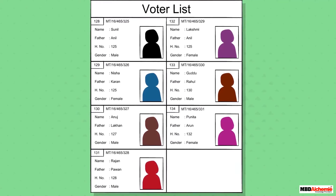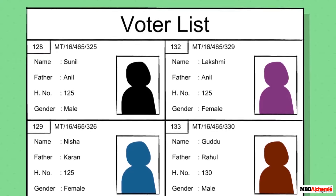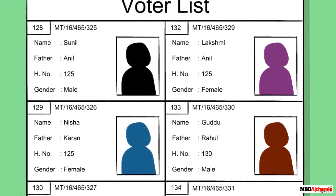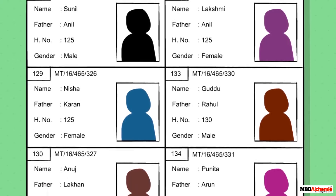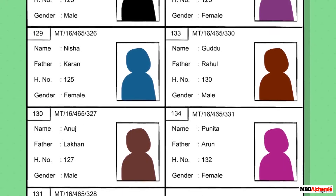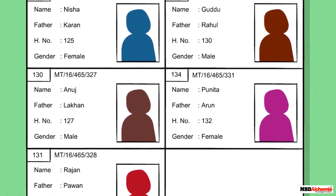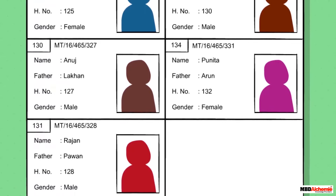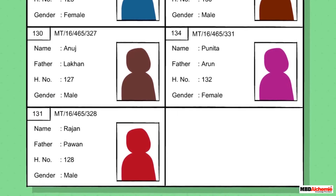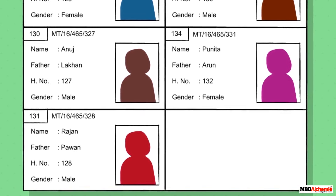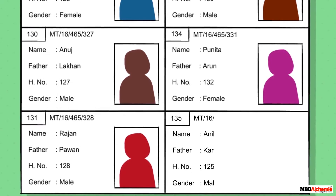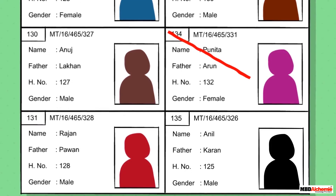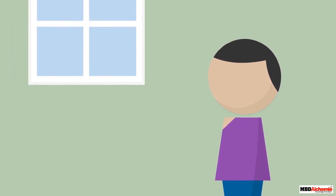Once the demarcation of constituencies is done, the electoral roll is prepared. The electoral roll is commonly known as the voters list. It is a list of all the people in each constituency who are registered to vote in the elections. Only those who have their names on the electoral roll are allowed to vote. The electoral roll is revised regularly to add the names of new voters and remove the names of those who do not belong to that constituency anymore.